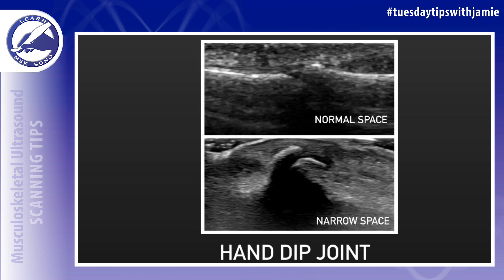When discussing the appearance of bony abnormalities on ultrasound, it's important to know that only the surface of the bone, called the cortex, can be visualized on ultrasound. Pathologies involving the bone can only be seen if the abnormality is present on the surface of the bone that can be visualized. You cannot rule out the presence of bony pathologies that are located in parts of the bone that cannot be visualized on ultrasound.